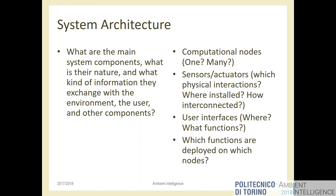Clarify which computational nodes you have — from a simple Arduino board to a full PC or cloud server, with a Raspberry or smartphone in between. Each can do some computation. Also specify which physical sensors and actuators exist in the system and where they're installed. And which user interfaces: web applications, mobile apps, or a touch panel mounted on a wall?